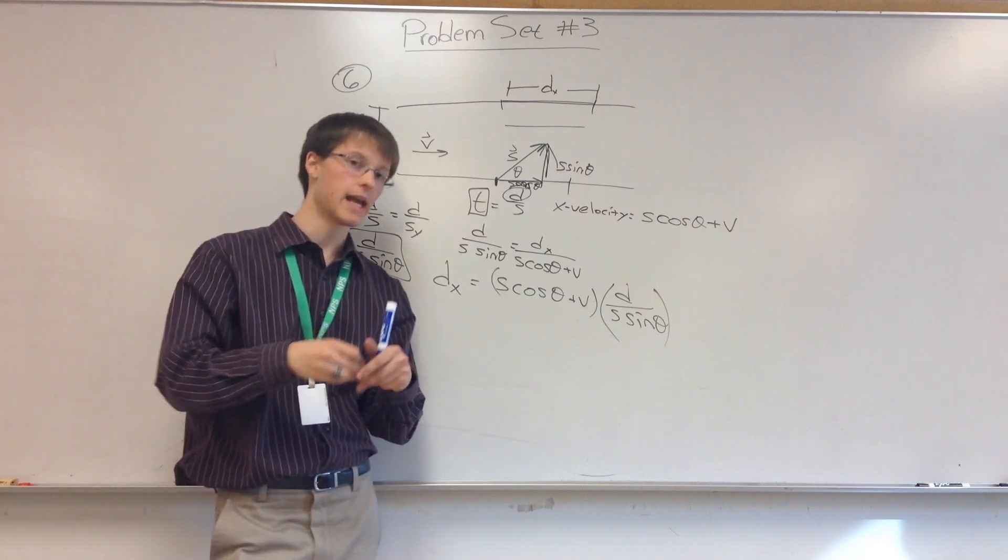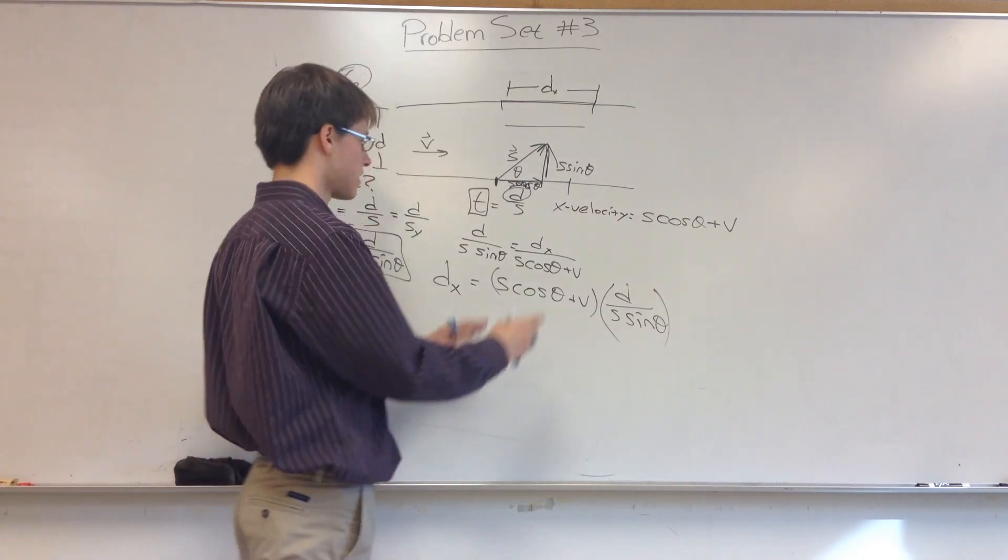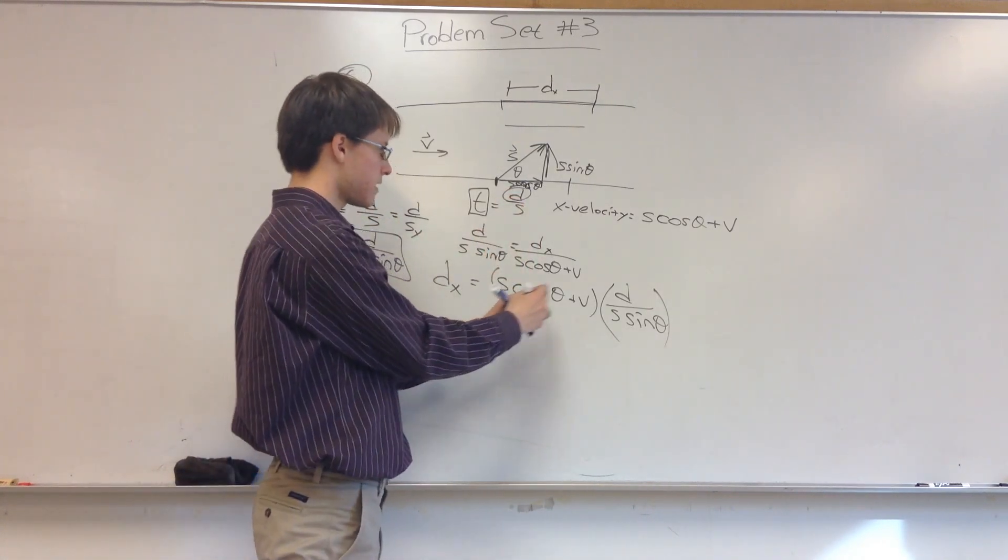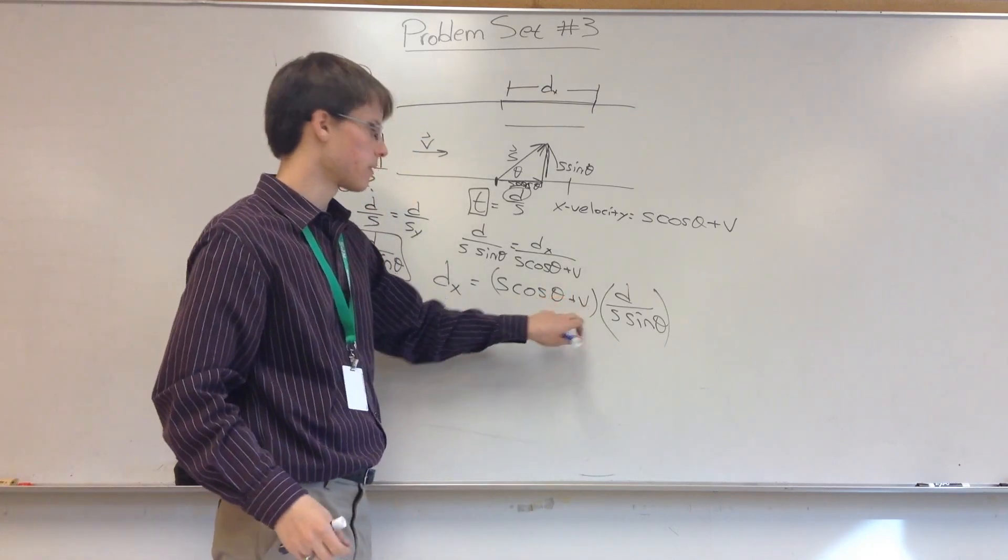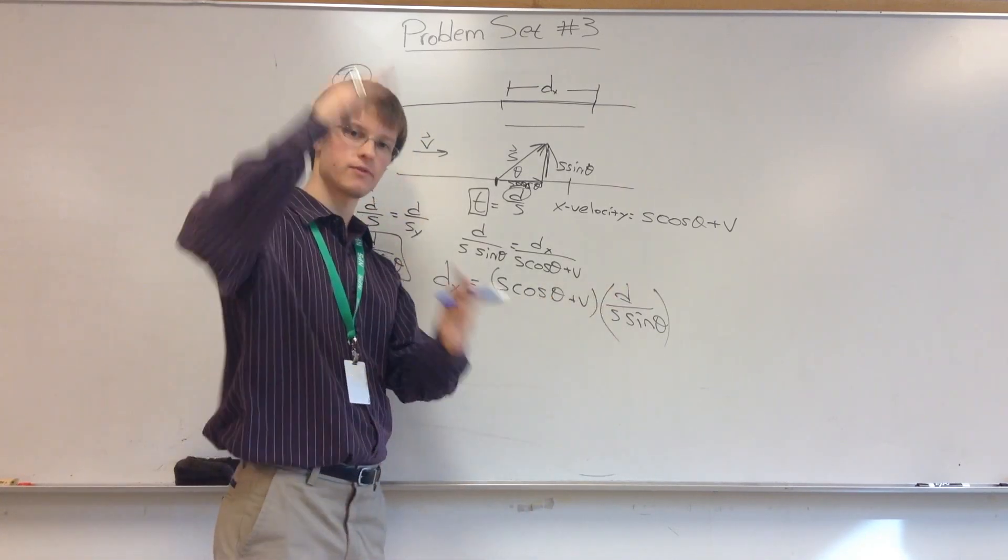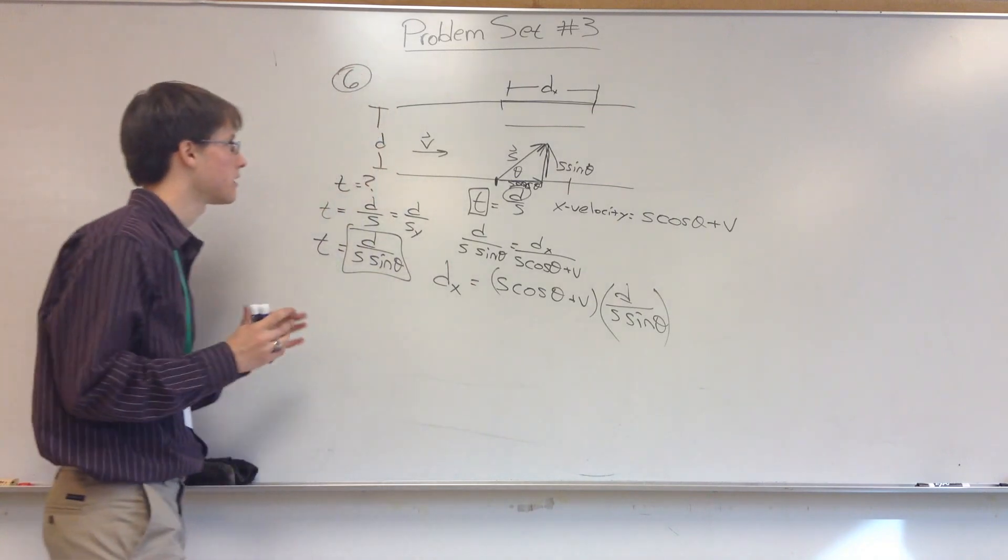And that's how far down the river he ends up, if the swimmer is traveling with a velocity of S, an angle of theta, through a river with a current of V. That is D, a distance of DY. So that's problem six.